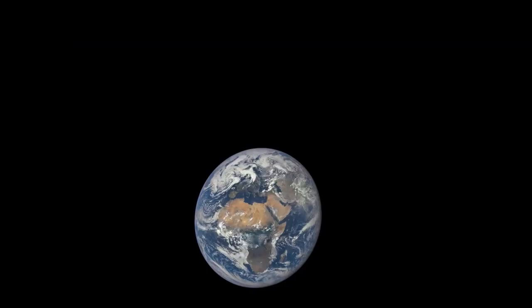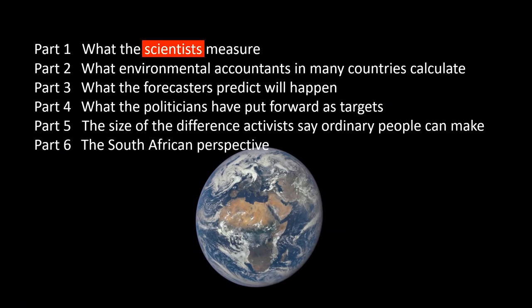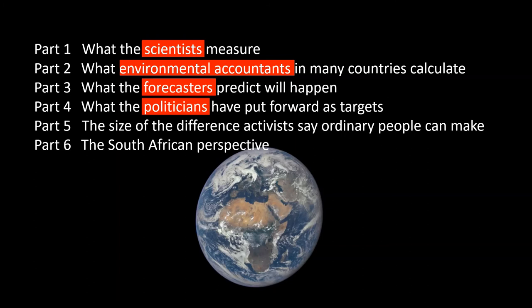The series of videos is broken up into six main parts. First, what the scientists measure. Next, what environmental accountants in many countries calculate. Thirdly, what the forecasters predict will happen. Then, what the politicians have put forward as targets. What activists say we as ordinary people can do to slow down climate change, and how big the effects of those actions are. And then there's a part with the South African perspective.